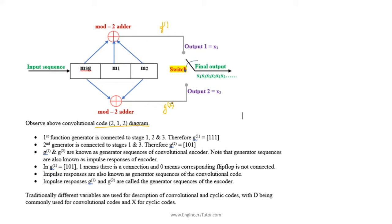Let us consider a 2,1,2 convolutional encoder. It has two outputs. The first generator function is connected to all stages of the encoder, so the tap gains will be 1, 1, 1. For the second generator, it is connected to only the first stage and the last stage of the encoder. So g1 and g2 here are known as generator sequences of the convolutional encoder.